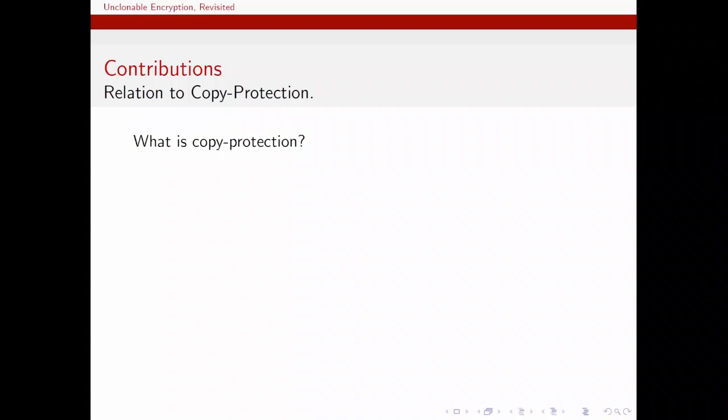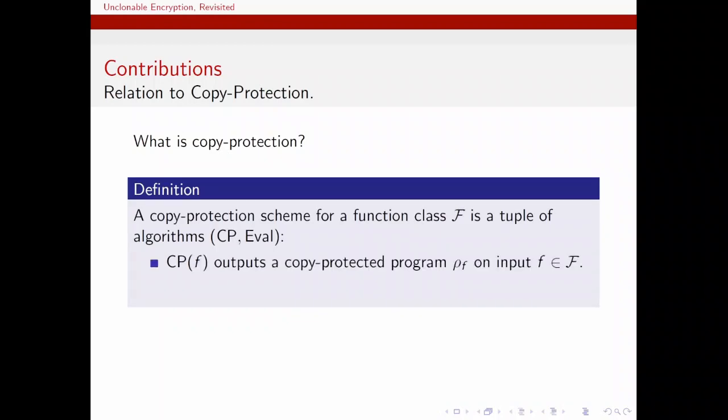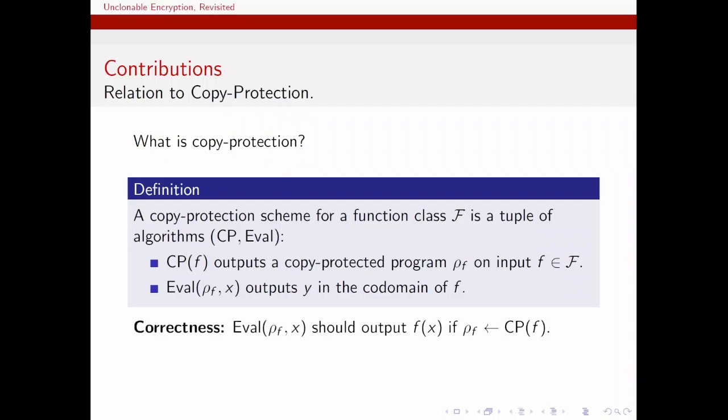Our final contribution is to show an implication from unclonable encryption to copy protection. A copy protection scheme is a tuple of algorithms, copy protect and evaluate. Given a function from a family, copy protect outputs a copy protected quantum state. And using that quantum state, a client can evaluate inputs of f. Correctness requires that if this is done honestly, the output should be equal to f of x. And security requires that it's impossible to make two copies of the copy protected program with the same functionality, even if a malicious evaluation algorithm is used.